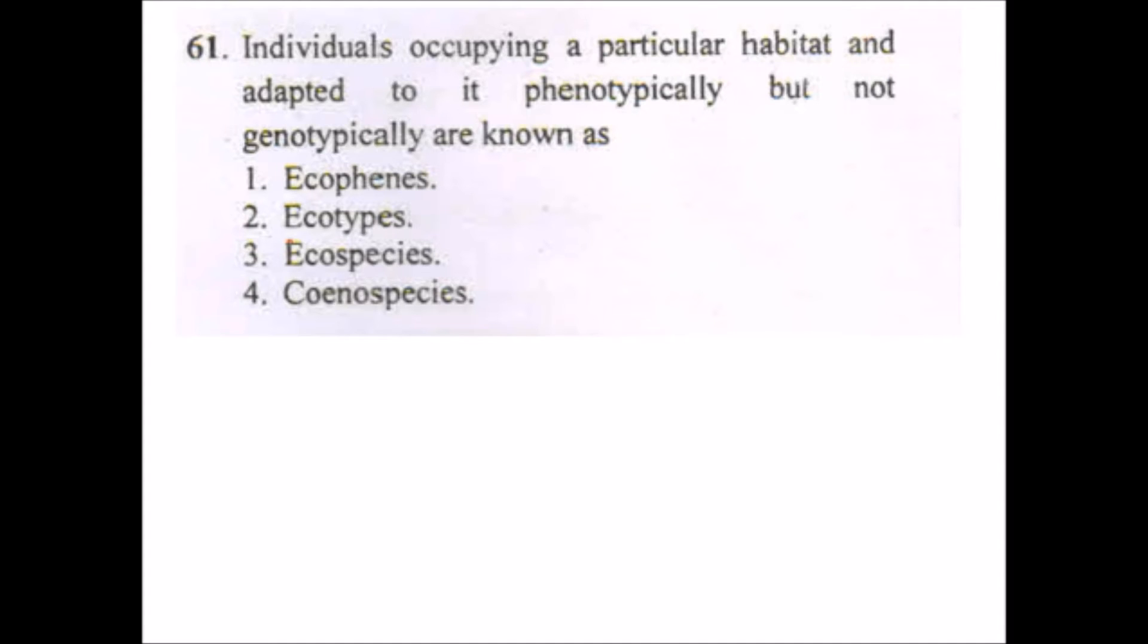There is only one pore which is known as monosulcate. But in case of dicot, it has three pores and its pollen is known as triporate. So the answer will be tricolpate pollen. Next question: individuals occupying a particular habitat and adapted to it phenotypically but not genotypically are known as ecophenes.